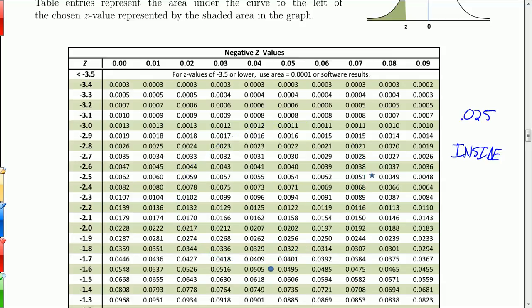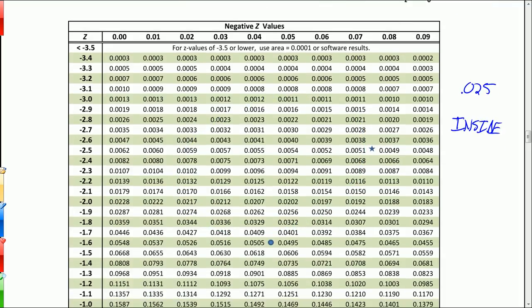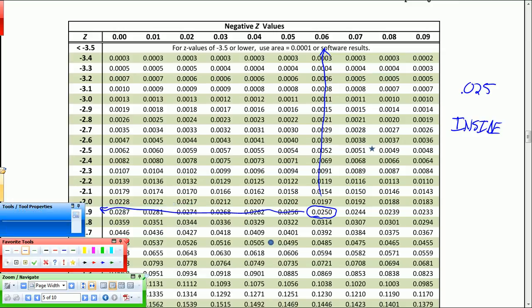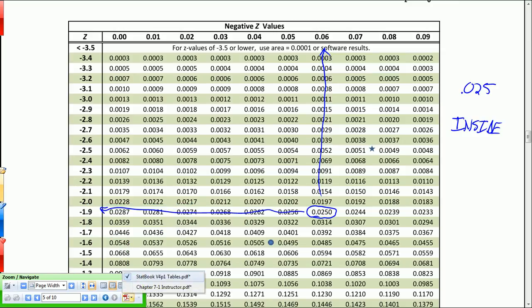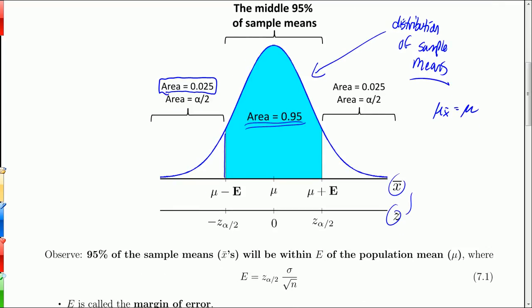We want to look for .025 inside the table. It's going to be a negative z score. So we're going to look for .025 inside the table. So if I look for .025, I've got to look around. But it actually has the exact value. There it is, .025. That's the one we're looking for. And so the z score that corresponds with that is negative 1.96. So I'm going to go back to where we were.